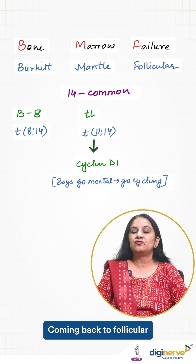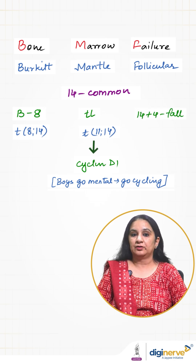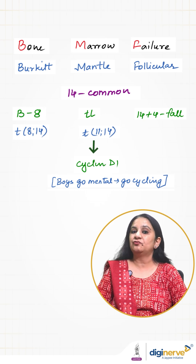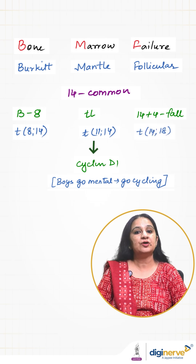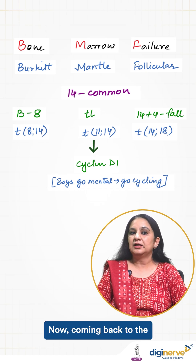Coming back to Follicular. 'Fall' sounds like 4, so the common number 14 plus fall, or 4, that's your 18. So, translocation t(14;18) for Follicular lymphoma.